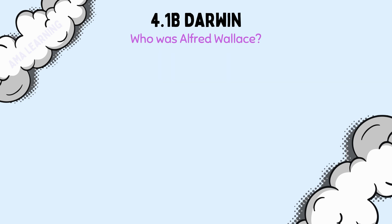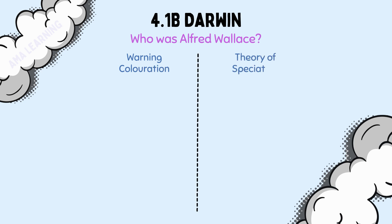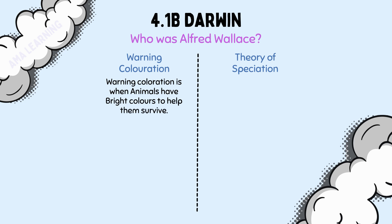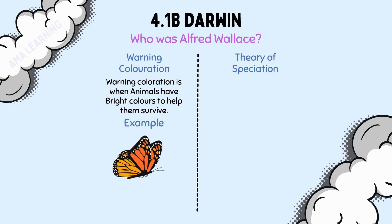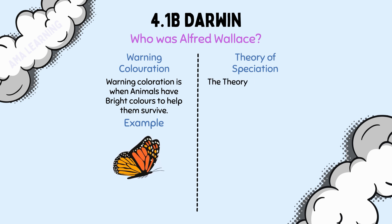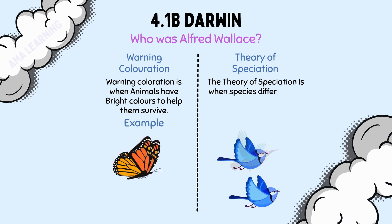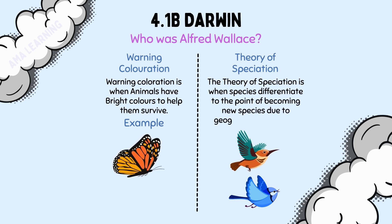Wallace is best known for his work on warning coloration and the theory of speciation. Warning coloration is when animals have bright colors to help them survive — for example, in butterflies, bright colors act as a defense mechanism by warning predators of toxicity. The theory of speciation is when species differentiate to the point of becoming new species due to geographic separation.